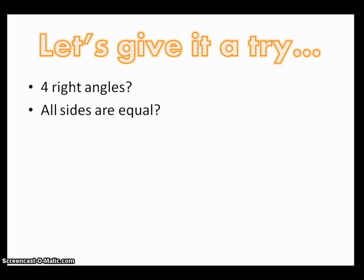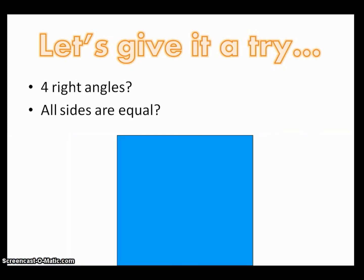So let's go ahead and give this a try now. What polygon that is a quadrilateral has four right angles and all the sides are equal? That's right, it's a square.